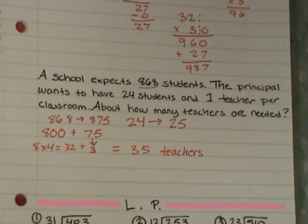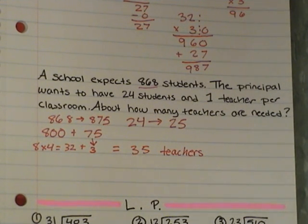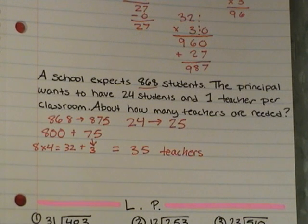Could you have done the normal division and gotten your answer? Yes, but sometimes we can do this in our head or do this much quicker if we use compatible numbers to help us with our problems. So what I did is I rounded 868 to 875, 24 to 25. Then I broke 875 into 800 and 75, and then I found out how many 25s could easily fit into both of those numbers. We just used the fact that in 100, four 25s can fit. And since we have 8, we multiply 8 by 4 to get 32. Then we know we have three 25s in 75, so we add 32 plus 3 to get about 35 teachers this school is going to need for around 868 students.